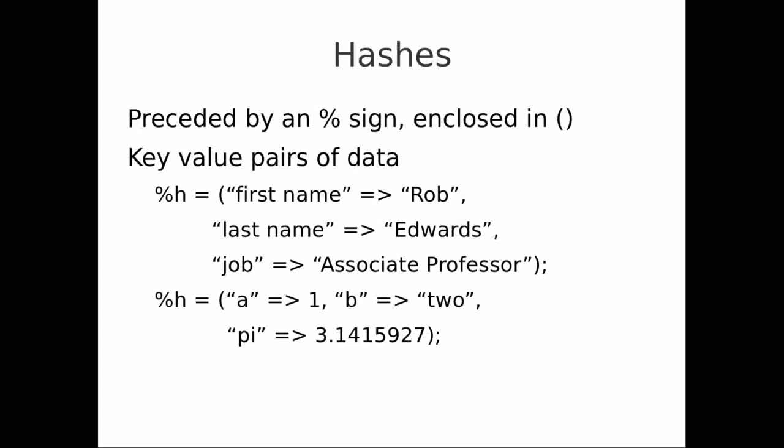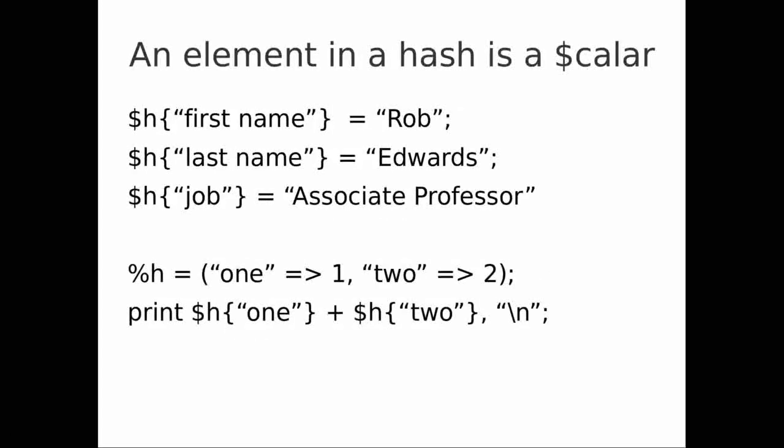Just like with arrays, each element in a hash is a scalar. So I can talk about the element that corresponds to 'first name' by using a dollar sign — $h{first_name} is equal to 'Rob', which is a scalar. $h{job} — that's a scalar. Each value associated with a key is a scalar. And I can do some simple arithmetic, like adding up the values associated with my keys.